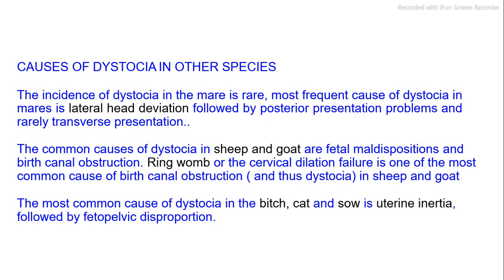Causes of dystocia in other species: The incidence of dystocia in the mare is rare; the most frequent cause is lateral head deviation, followed by posterior presentation problems and rarely transverse presentation. In sheep and goats, common causes are fetal maldispositions and birth canal obstruction; ring womb (cervical dilation failure) is one of the most common causes. The most common cause of dystocia in the bitch and cat is uterine inertia, followed by fetopelvic disproportion.